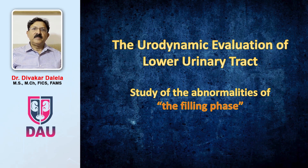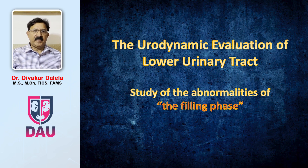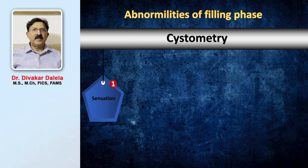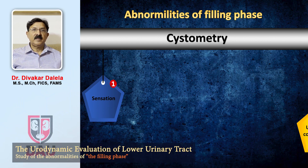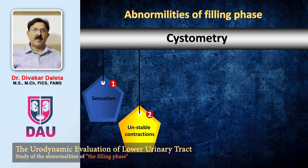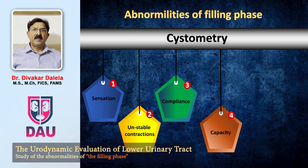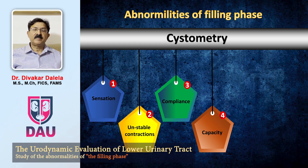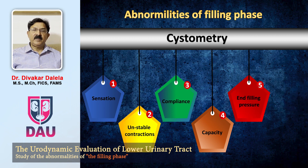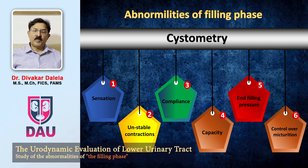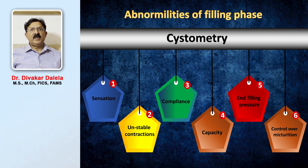Hello friends. In this video on urodynamic evaluation, we shall learn some basics about the abnormalities that we pick in the filling phase, that is the cystometry. We record here firstly the sensation — the first sensation and the maximum sensation. We record any unstable contraction happening in the detrusor muscle, we record the compliance of the detrusor muscle, we record the capacity of the urinary bladder — the maximum cystometric capacity — we record end filling pressures, and we also record the appropriateness of control over the micturition. We record these six features.